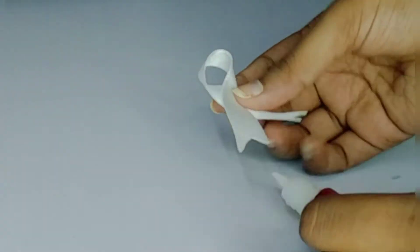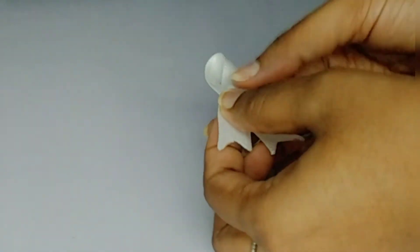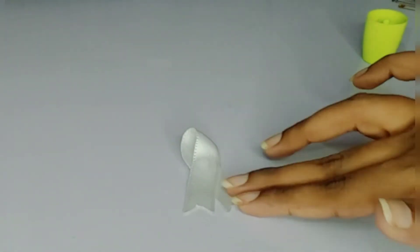Now, we will use fabric glue and paste it in the center and hold it and paste it. It will completely dry.